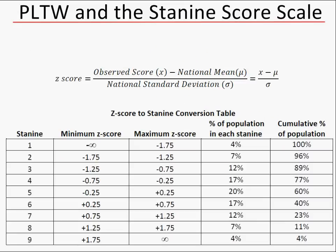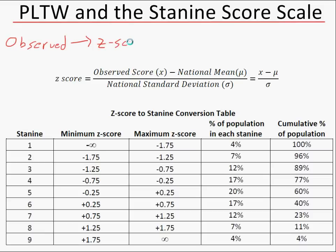The way we develop the z-scores is as follows. We first start out with the observed scores — these are the scores that students actually get on the test. We then convert the observed score into a z-score, which can be very useful to look at. And then from the z-score, we convert that into a stanine score.